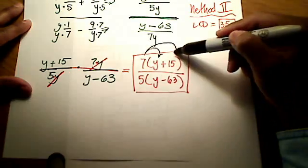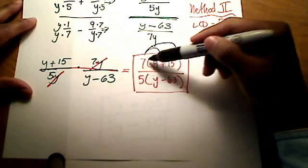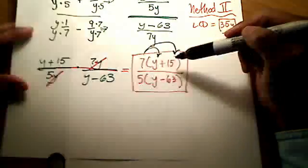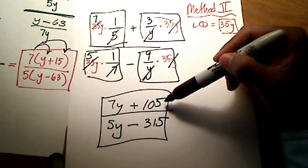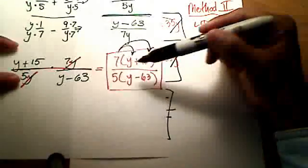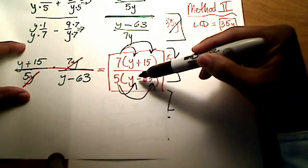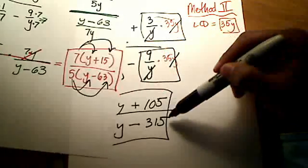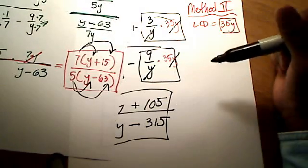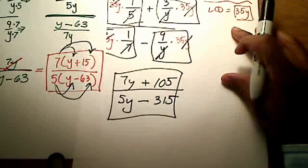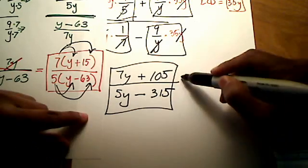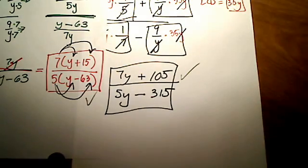If you take 7 and distribute it into both of these two terms, you'll see that you'll have 7y. And 7 times 15 gets you to 105. And if you distribute this 5 times both of these terms inside here, you'll see that you'll have 5y minus 315. So, it actually does come out to be exactly the same. And if you were doing this on my math lab, it would take either one of these two answers. They're both correct, same answer. Hope that helps.